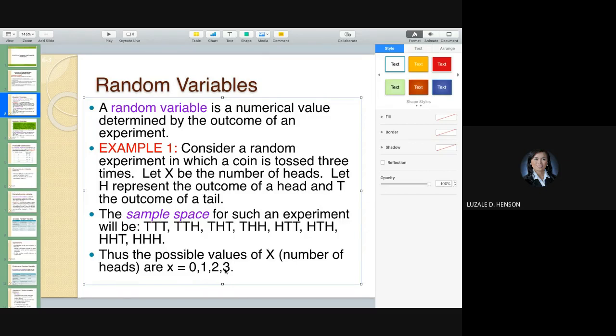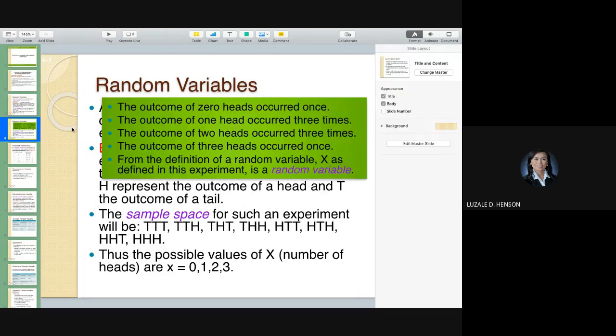After tossing three coins, there may be three. It can't be four, because you only toss three times. So, the outcome of zero heads, of course, only one. Because the other combinations have a head. The outcome of one head occurred three times. One, two, three. Three times. The outcome of two heads occurred also three times. So, from the definition of random variable, X would assume any of these outcomes.